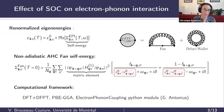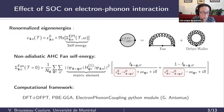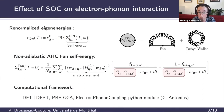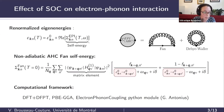I won't go into detail about the methodology since it's been discussed already in the previous talk. We worked with the Allen-Heine-Cardona formalism with a DFT plus DFPT computational framework, and all the post-processing was done with the electron-phonon coupling Python module by Gabriel Antonius. Within this framework, the ZPR is given by the real part of the electron-phonon self-energy, which is itself the sum of the Fan and the Debye-Waller contributions.